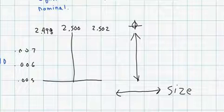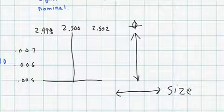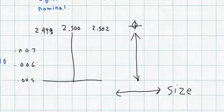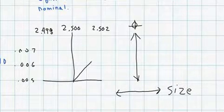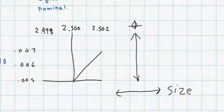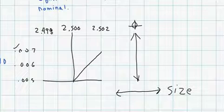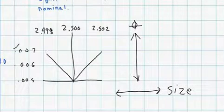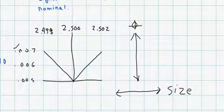If I start at two inches five hundred and increase in size to two inches five hundred and two, I'm allowed seven thousandths. And if I start at two inches five hundred and decrease in size to two inches four ninety-eight, I'm allowed a positional tolerance of seven thousandths as well.